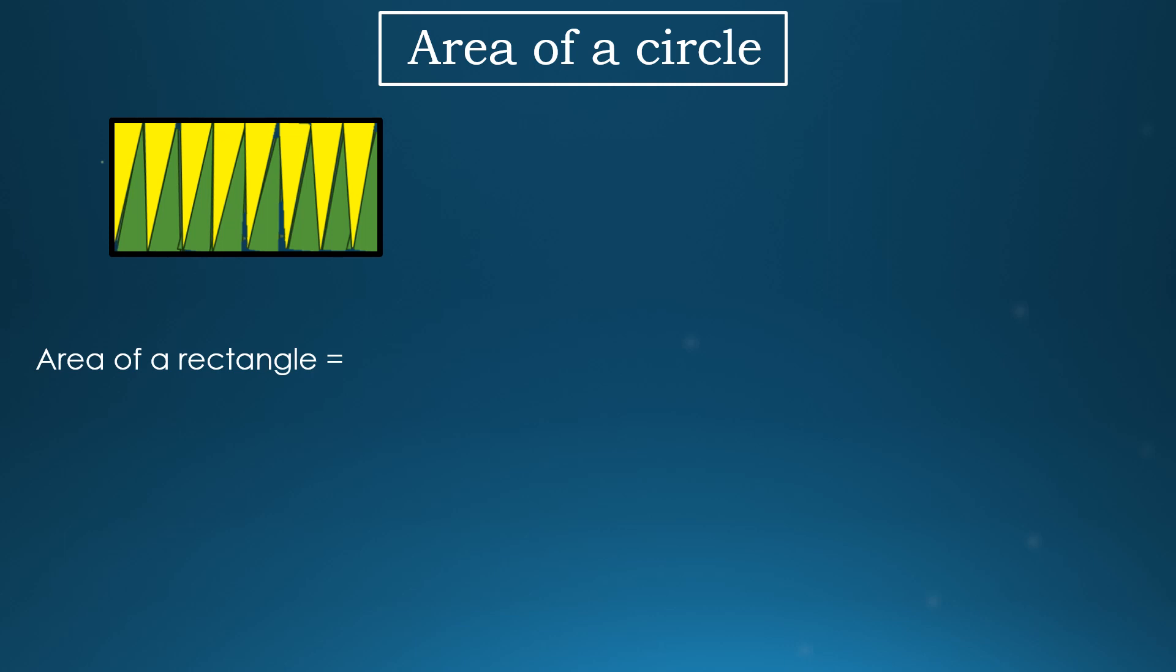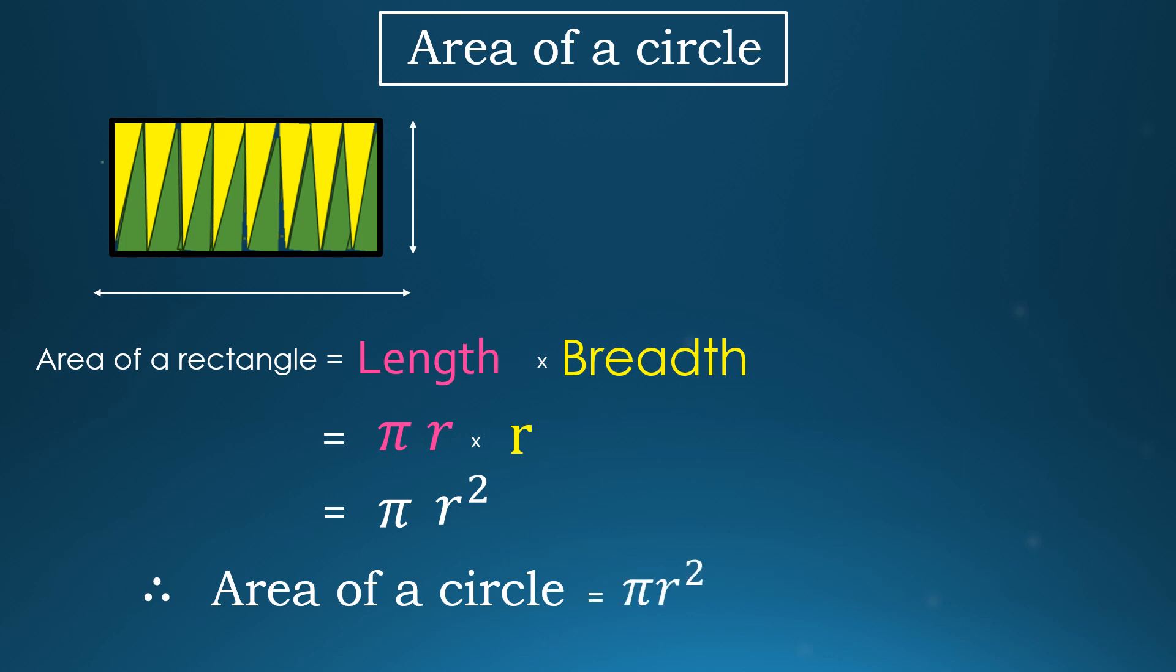So, the area of the rectangle is equal to length into breadth. Here, length is pi r, breadth is r. We get pi r square. Therefore, the area of the circle is equal to pi r square.